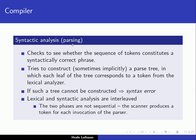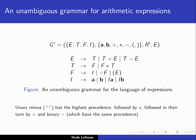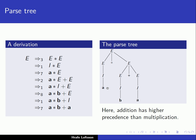Therefore we come to the next part: syntactic analysis, or parsing. The function of the parser is to check whether the sequence it gets from the lexical analyzer constitutes a syntactically correct phrase or not. Often the parser tries to construct a parse tree in which each leaf corresponds to a token from the lexical analyzer — something we saw earlier. For example, a parse tree for a * b + a has the tokens at its leaves.